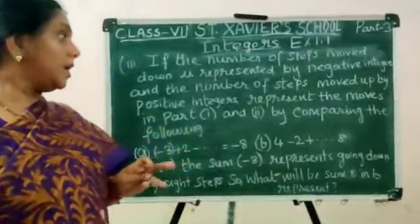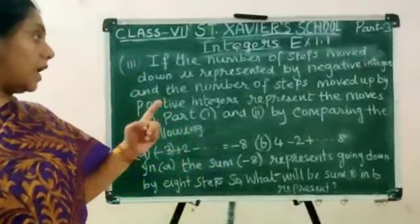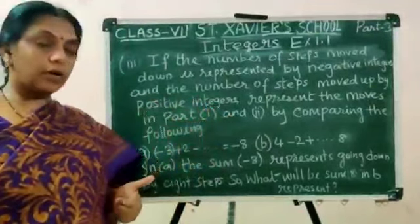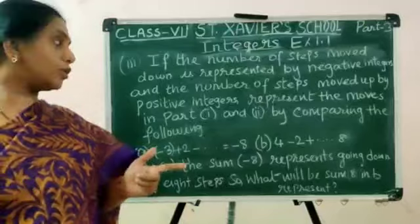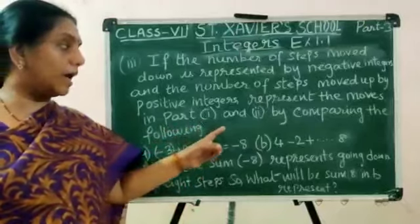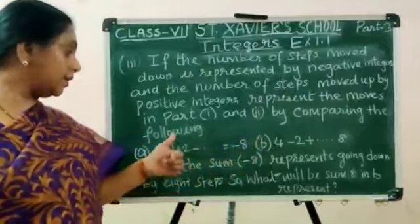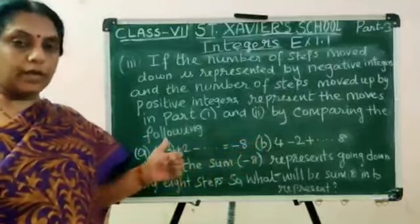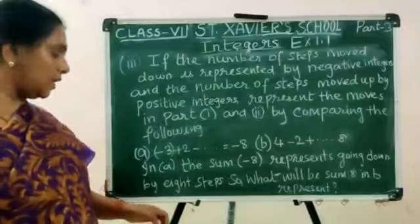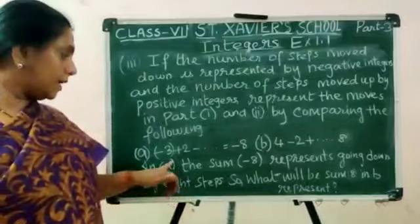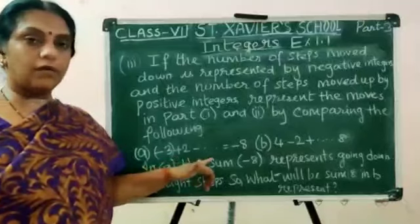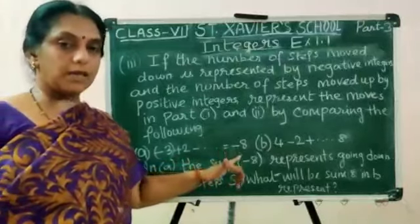3rd part: if the number of steps moved down is represented by the negative integer and the number of steps moved up by the positive integer, represent the moves in part 1 and part 2. In the 1st question, steps down is minus 3 and going up is plus 2. With 11 jumps total, you get minus 8.